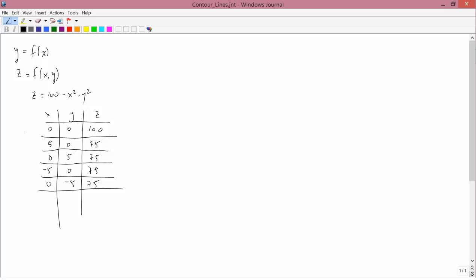Let's do plus or minus 10 and 0. If x is either plus 10 or minus 10, it doesn't matter, then x squared is 100. So we'd have 100 minus 100 minus 0, which is 0. And if x is 0 and y was either plus or minus 10, then we'd have 100 minus 0 squared minus 100, and so that would be 0.